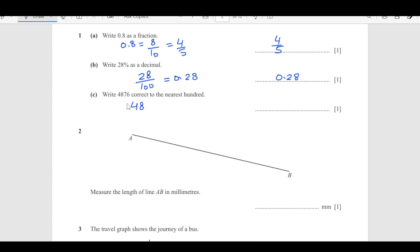Write 4876 correct to nearest 100. We have 4876, hundreds place. This is the place we are looking for. The digit to the right is 7 which is greater than 5, so it will be rounded up. We are going to add 1, so that will become 4900.